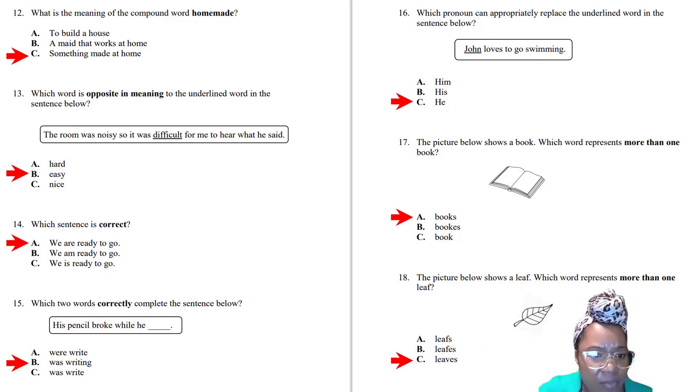Question fourteen: Which sentence is correct? We are ready to go, we am ready to go, we is ready to go. Sometimes you need to read it and hear it, and you'll pick up the answer. Question fifteen: Which two words correctly complete the sentence? 'His pencil broke while he blank.' He was writing. It has to be 'was writing' because we have a singular pronoun there, present continuous.